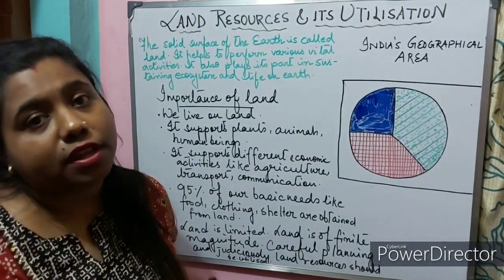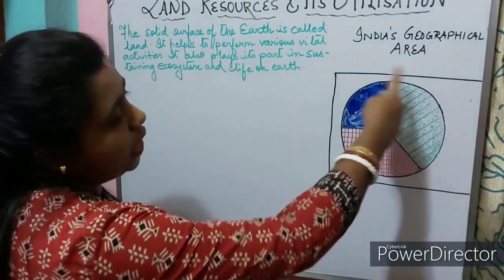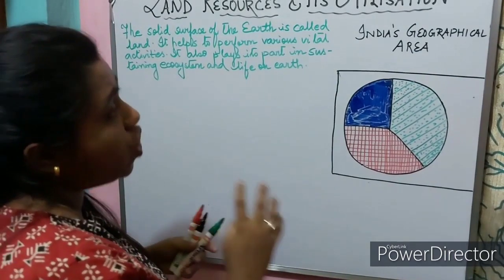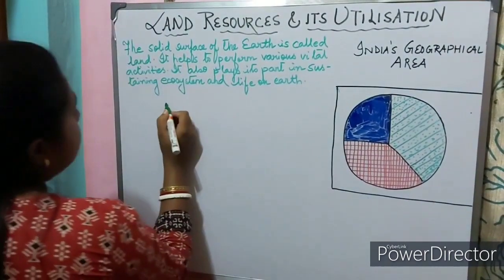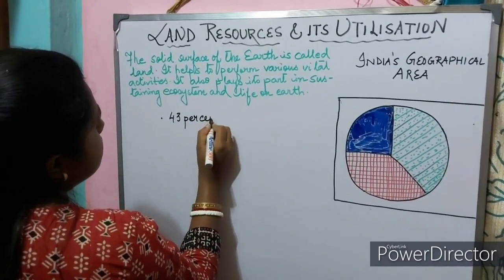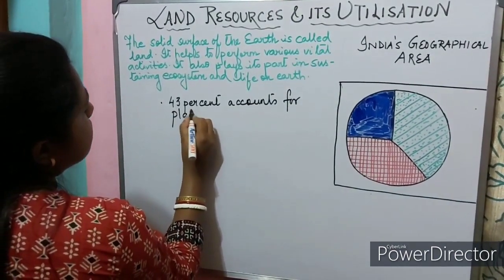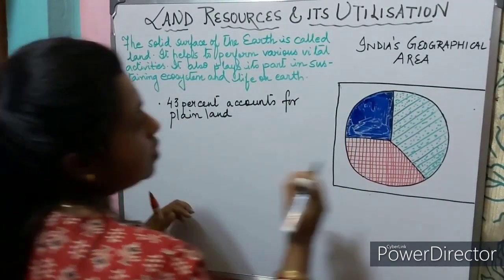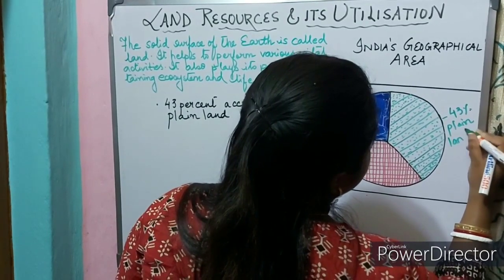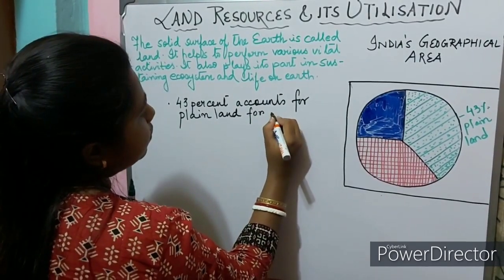Now let us move ahead with India's geographical area. We will try to understand India's geographical area with the help of this pie diagram. India's geographical area comprises: number one, 43 percent accounts for plain land, which is suitable for cultivation.